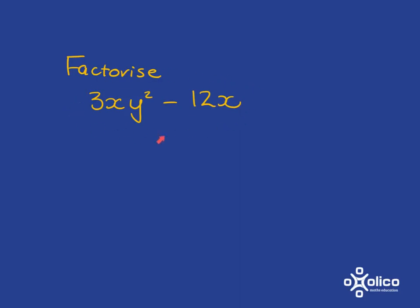So if we have a look over here, is there something that can divide into 3 and also into 12? Well yes, there is. 3 can. And then, is there something that can divide into x and x? Well yes, x can. And so what are we left with? We're then left with y squared. And from the 12x, we are left with minus 4. And now we have got a difference of two squares, and so we just factorise.